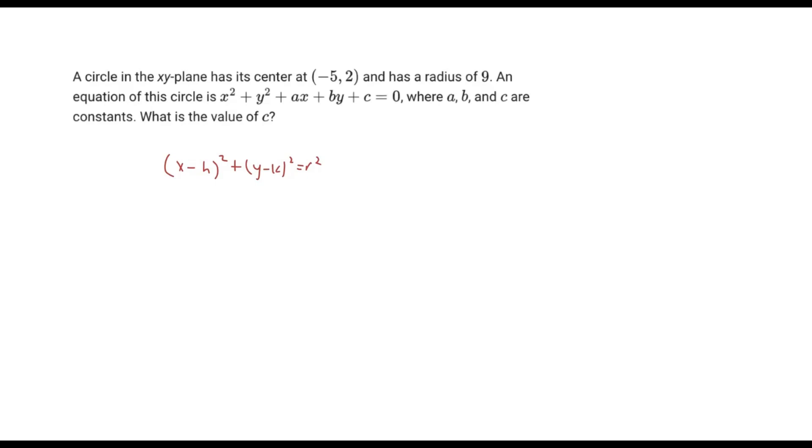The next problem says a circle in the xy-plane has its center at coordinates (-5, 2) and has a radius of 9. The equation of the circle is x² + y² + ax + by + c = 0, where a, b, and c are constants. What is the value of c?